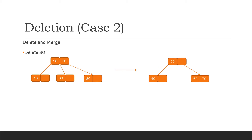The second case of deletion occurs when we want to delete and merge. For instance, if we want to delete 80 from the left tree, we first search for it. Since 80 is greater than 70, it must be in the right subtree. We find and remove 80, but the node will now be vacant. What we do is merge the node that contained 80 with the node containing 60, and pull the parent value down to the bottom. Here, 70 was moved to the bottom as the right child.